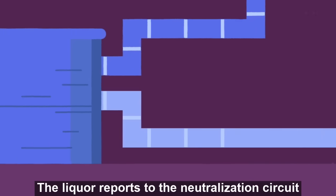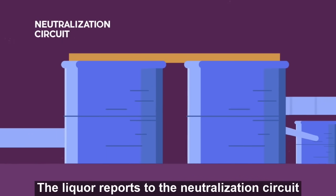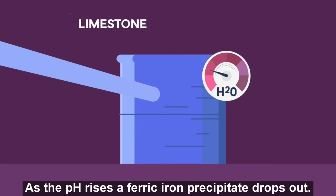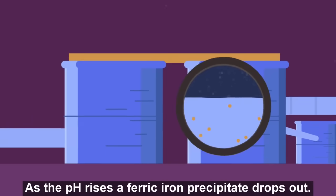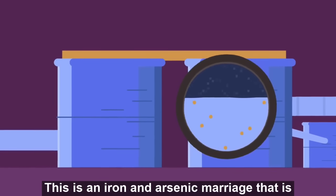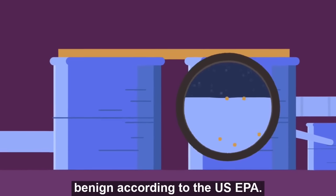The liquor reports to the neutralization circuit where limestone is added to raise the pH of the water. As the pH rises a ferric iron precipitate drops out. This is an iron and arsenic marriage that is benign according to the U.S. EPA.